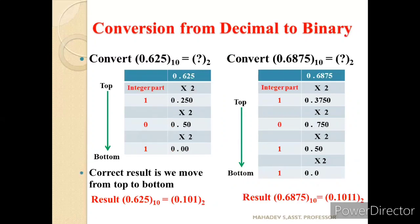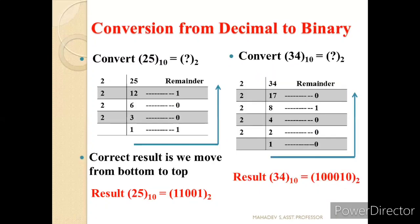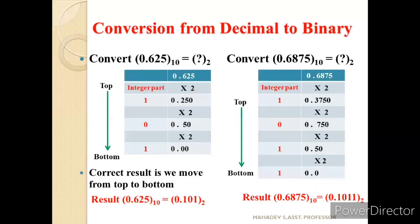Now let us understand how a fractional decimal number is converted to binary. It is just the reverse operation of the integer method. For integers we divided; for fractionals we multiply — exactly the opposite. So if you see here, 0.625 is multiplied by 2.